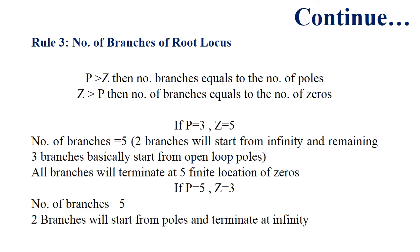The third rule is the number of branches of root locus. If the number of poles in the system is greater than zeros, then number of branches equals the number of poles. If zeros in the system are greater than the poles, then number of branches equals the number of zeros. For example, if we have 3 poles and 5 zeros, then the number of branches is 5. Two branches from the 5 will start from infinity because the difference between poles and zeros equals 2, and the remaining 3 branches start from open-loop poles. All branches will terminate at the 5 finite locations of zeros.